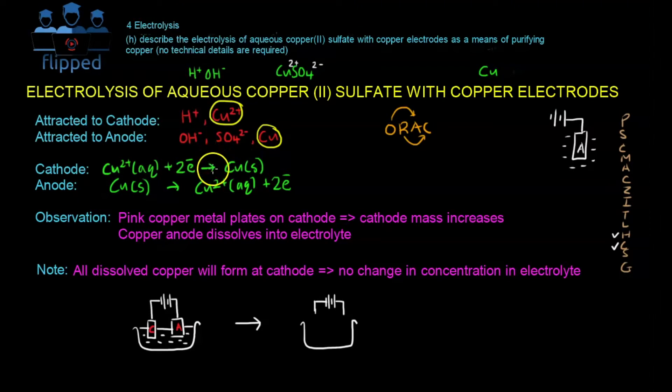So you may be asking, hey, where's the overall equation? There's no overall equation here, because if you realize, everything cancels out. If I cancel away the 2 electrons, and then cancel this 2 plus, 2 plus, and then cancel this Cu and Cu, there's nothing left at the end. This is a recycling process. Whatever is being dissolved will form at the cathode.